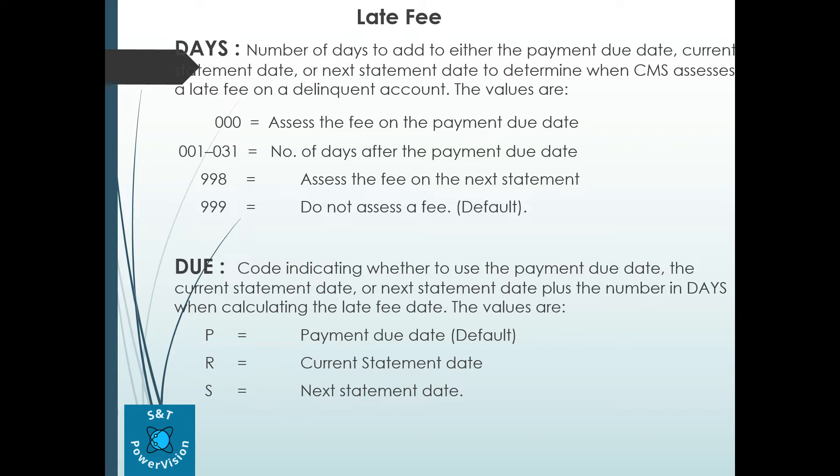If the Days value is 001 to 031, the system calculates the fee after the due date — for example, if the due date is the 5th and the system is set to calculate on the 7th or 8th, it will calculate on that day only. Value 998 means assess the fee on the next statement date — suppose your cycle date is the 15th and due date is the 5th; even if the customer did not make payment on time, the late fee will be calculated and posted on the next 15th cycle day.